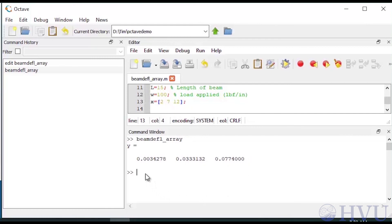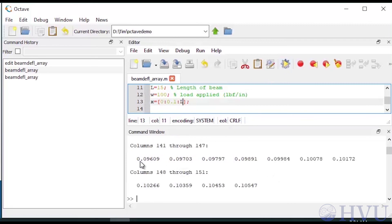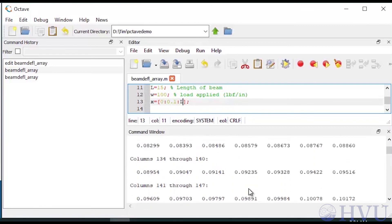I can easily modify my file to calculate the displacement for a lot of X values. I'll use colon notation to create an array of X values starting at 0, having increments of 0.1, and ending at L. Save this and run it. These are the deflections for all of those X values.